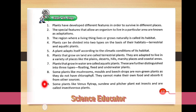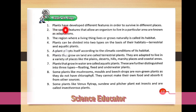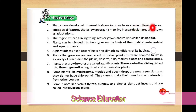Let's start a recall with bingo on what you have studied in this chapter. First summary point: plants have developed different features in order to survive in different places. Plants develop different features which allow them to survive in any particular place.